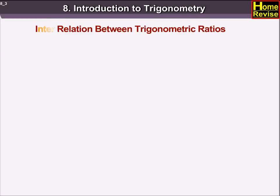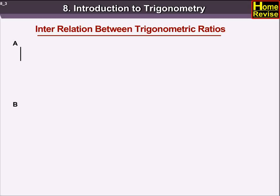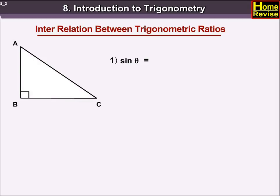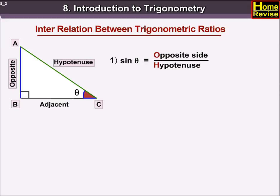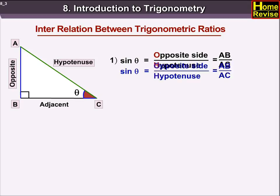Let us see the interrelation between trigonometric ratios. In triangle ABC, sin theta is equal to opposite side upon hypotenuse, that equals AB upon AC.